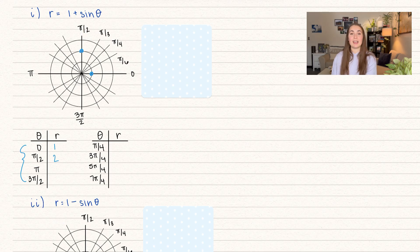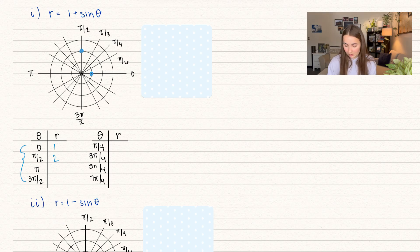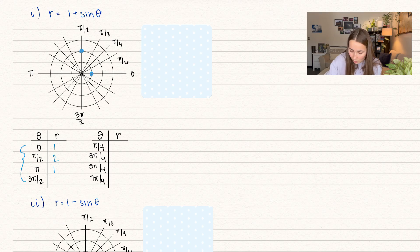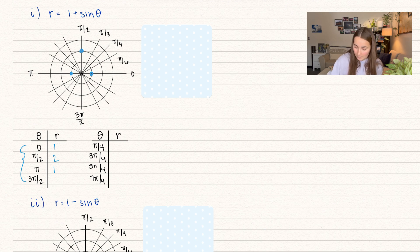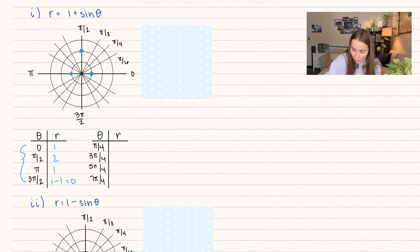For pi, sine of pi is also zero, so we get one plus zero equals one. At angle pi, we go out a distance of one. Finally, for three pi over two: one plus sine of three pi over two. Sine of three pi over two equals negative one, so we get one minus one equals zero — that's where we hit the origin.